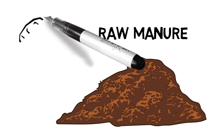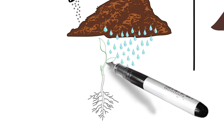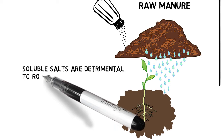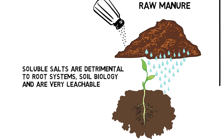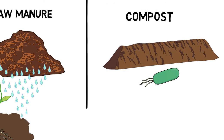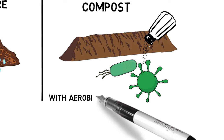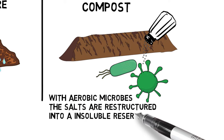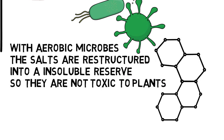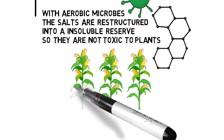Raw manures are very high in soluble salts, which are detrimental to root systems, detrimental to soil biology, and very leachable — meaning they can easily be lost into other water bodies. Composting that manure through an aerobic process, where microbes require oxygen, restructures those salts into an insoluble reserve so they do not affect other soil microorganism populations, are not toxic to plant roots, and are not leachable.